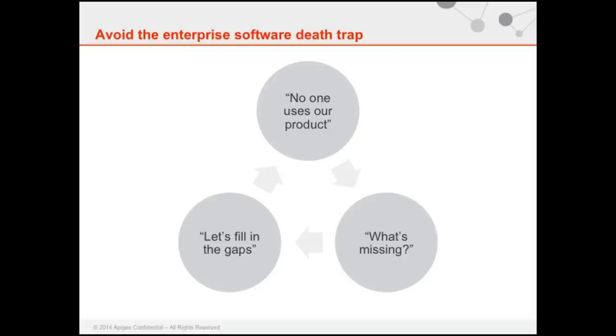One of the things about building enterprise software is that one of the biggest traps we can get into is taking a customer's word on face value, especially their requests. It kind of goes like this: you ask the customer what's missing, they tell you a requirement, the engineering team goes off implementing it, and then they don't use that feature. The team tries to figure out what else to do, asks again, and this death trap ends up being one of the root causes of why enterprise software becomes extremely bloated, not useful to customers, very expensive, and hard to use.